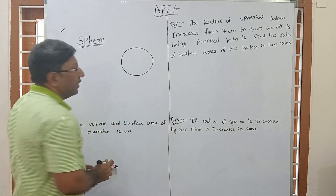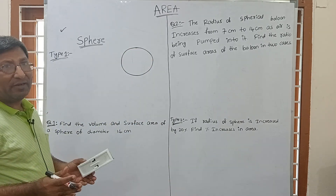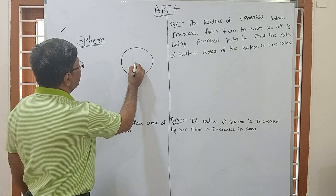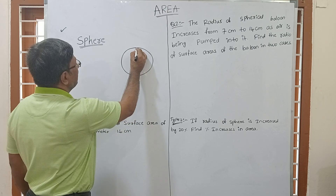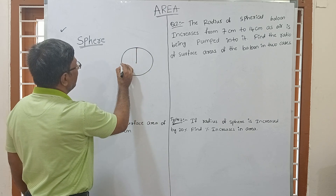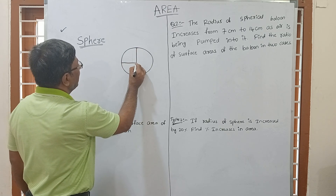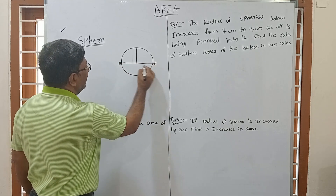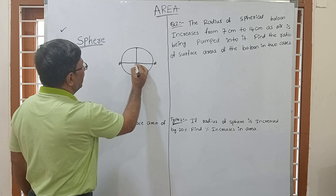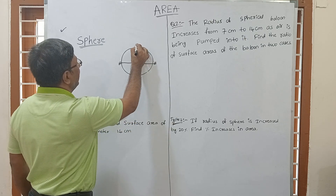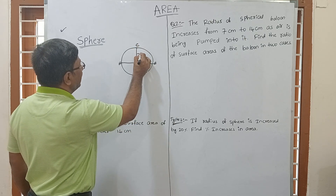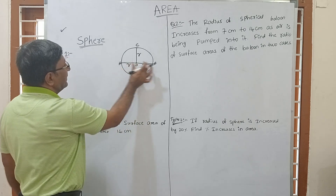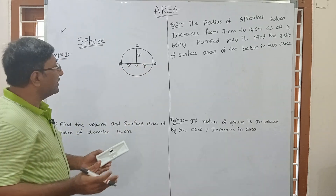A Sphere is a 3-dimensional solid shape. Suppose this is the centre. This is the radius of the sphere, and this is the diameter. So this is point A, this is point B, and this is the centre point C. So CA, CB, and CC will each be the radius.